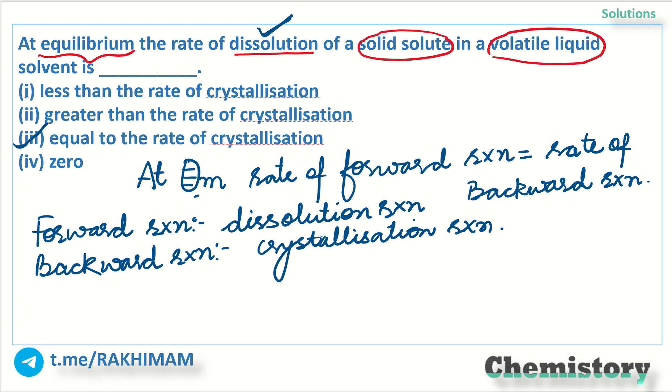It can change depending on the amount of solute to be dissolved. So we can say that the rate of dissolution can be considered as the forward reaction and the rate of crystallization will be the backward reaction. This means that the rate of crystallization is equal to the rate of dissolution for a solid solute in a volatile liquid. Clear or not clear?